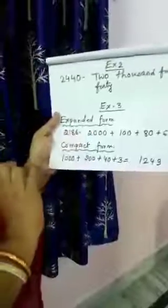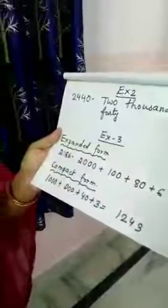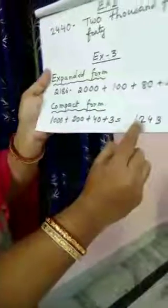Exercise 3 — expanded form. Do you know the meaning of expanded form? We have to write in a larger way. Like 2186 — we will elaborate it. Now, compact form means we write in a small way, like 1000 + 200 + 40 + 3. So expanded form is the large way and compact form is the small way. For example: 1243.